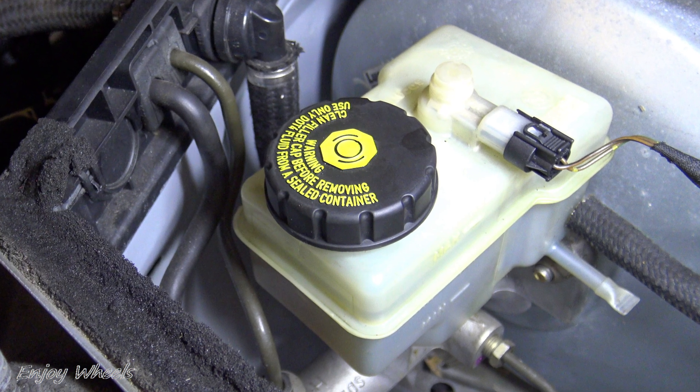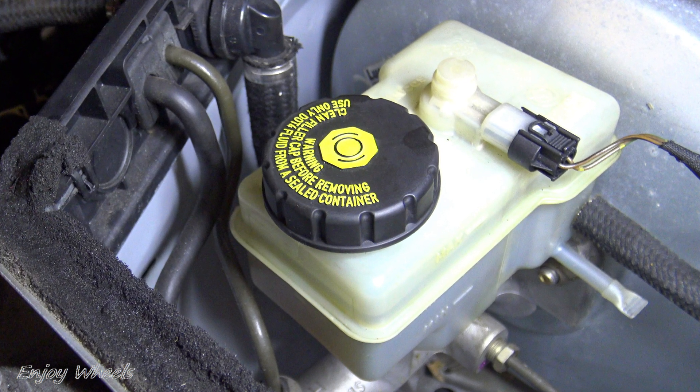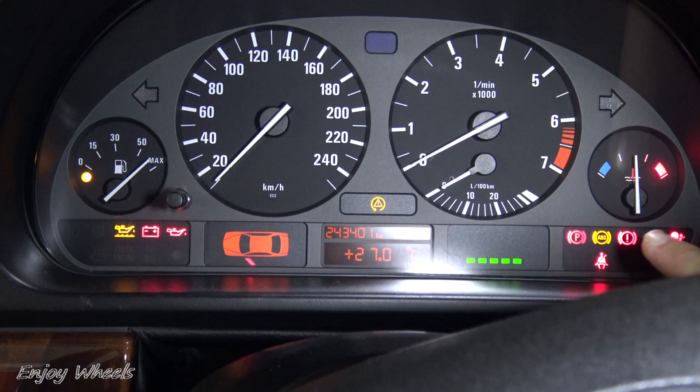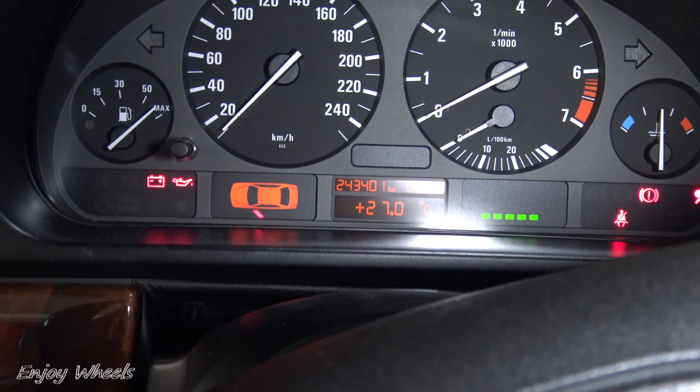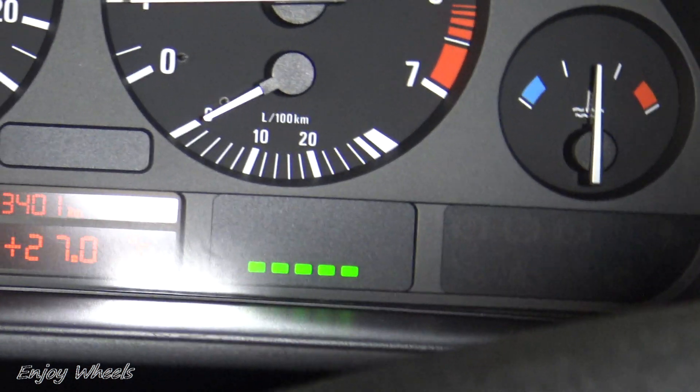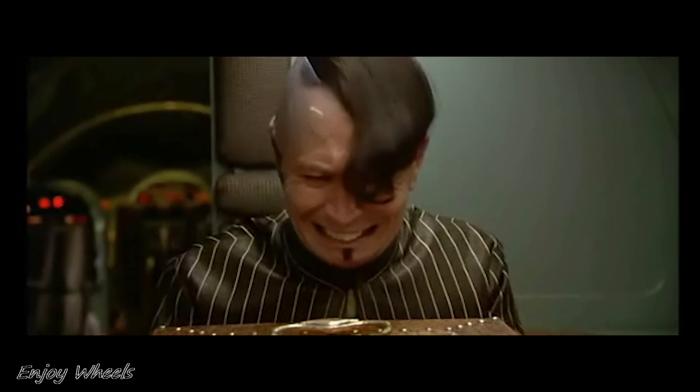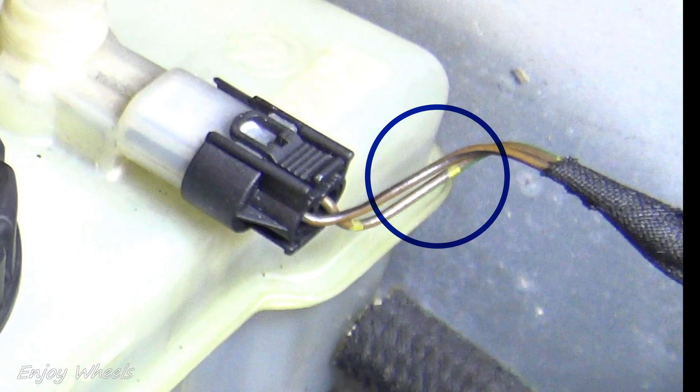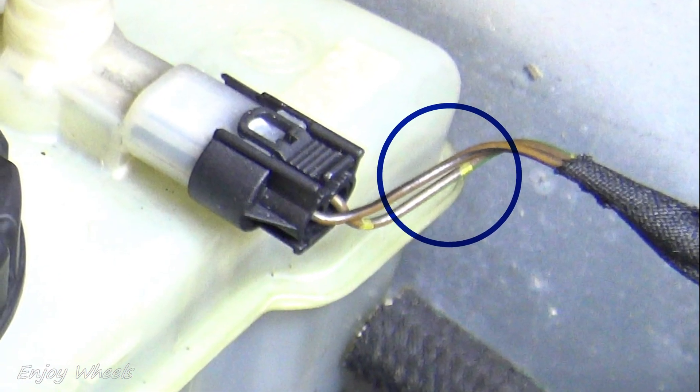Now I will check that the float system is working well. As I told you at the beginning, the light comes on intermittently. At the beginning of the video it was still on and now it doesn't light up anymore. Do you see the two wires there? An electrical contact is made when the brake fluid level is too low.